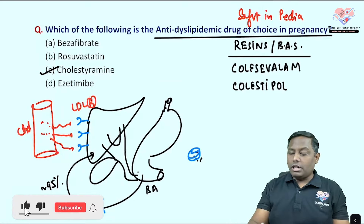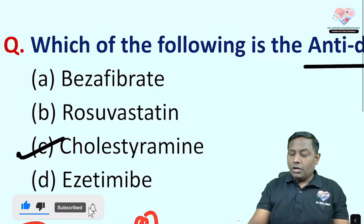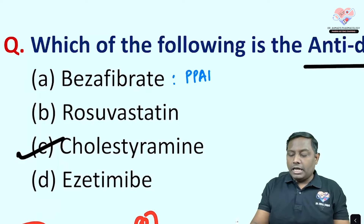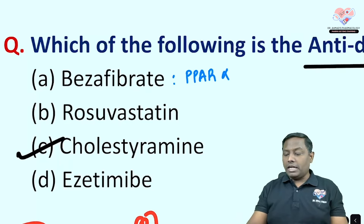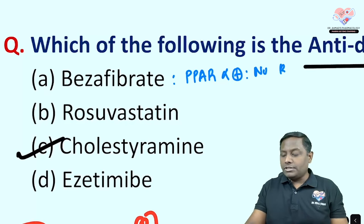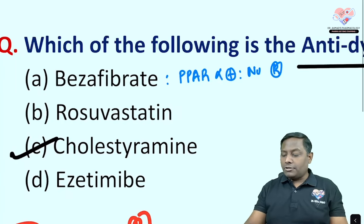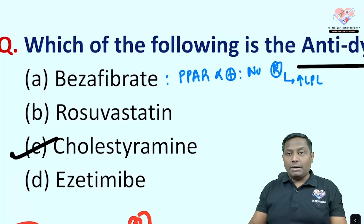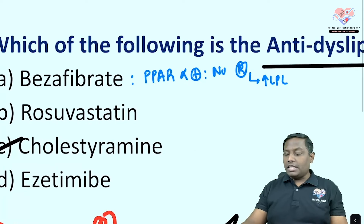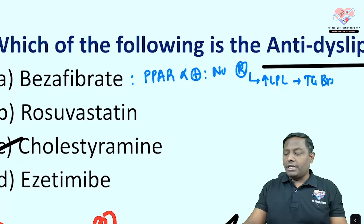Now let's rule out the other options. Fibrates like fenofibrate and gemfibrozil are PPAR-alpha agonists. They act via a nuclear receptor to increase the level of lipoprotein lipase, which ultimately causes triglyceride breakdown.